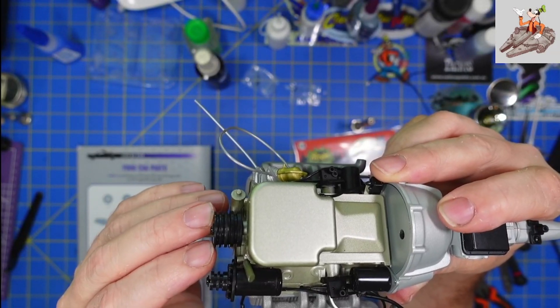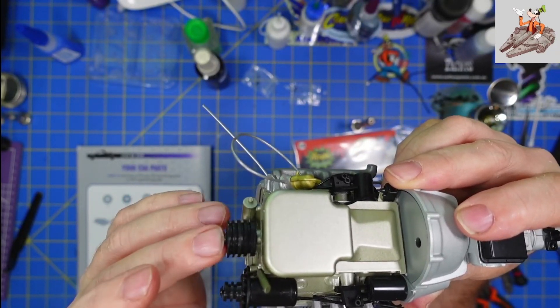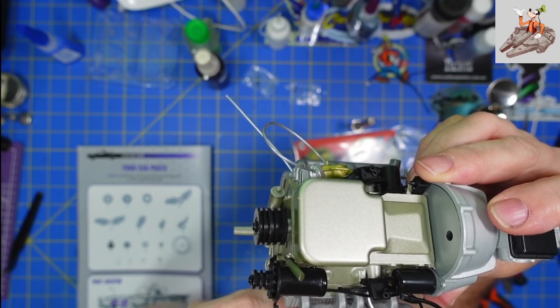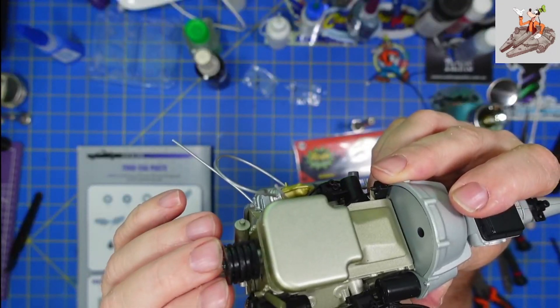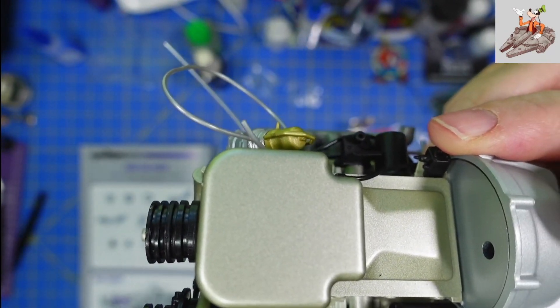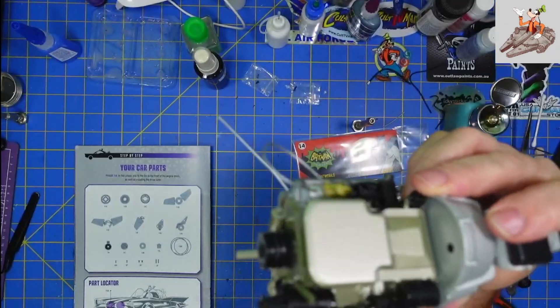But it also says in the instructions, the pulleys are numbered 1 through 5, which they aren't. They're all numbered 3. So if you have problems getting this part on, hopefully you'll see this before you make the same mistake I did.